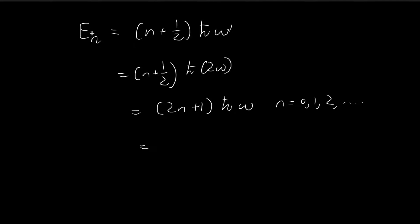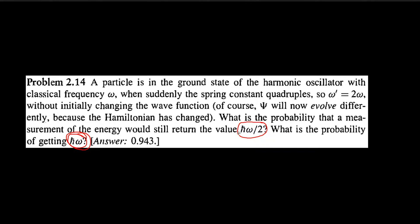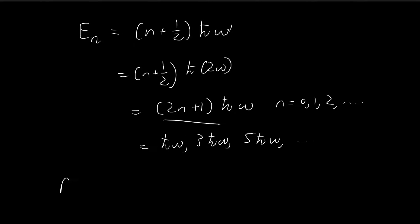The possible energy states are ℏω, 3ℏω, 5ℏω, and so on — all odd multiples of ℏω. So immediately you can see that it is impossible to get ℏω/2. Therefore, the probability that the energy measurement equals ℏω/2 is equal to zero. It is simply impossible.